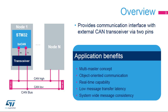The Controller Area Network, or CAN, is a standard serial differential bus broadcast interface, allowing the microcontroller to communicate with external devices connected to the same network bus. The CAN interface is highly configurable, allowing nodes to easily connect using two wires.